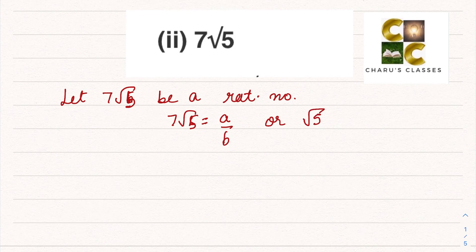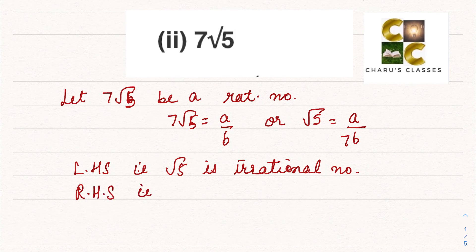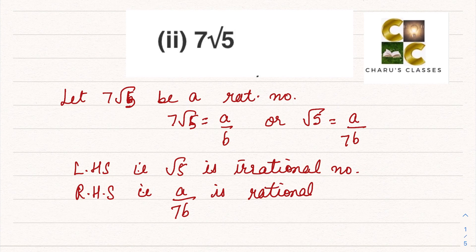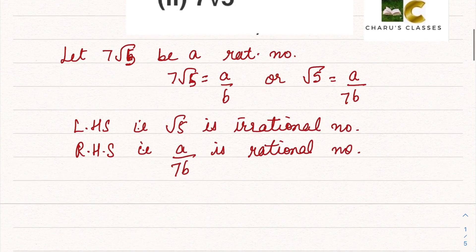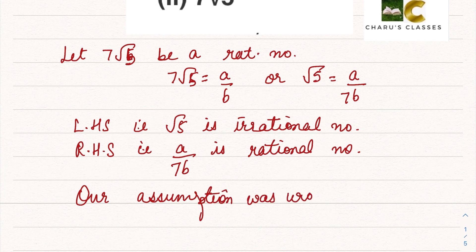We can say root 5 can be written as a by 7b. The left hand side is root 5, which we know is an irrational number, and the right hand side, a by 7b, is in the form of p by q, so it is a rational number. Since left hand side is irrational and right hand side is rational, our assumption was wrong, and 7 root 5 is an irrational number.